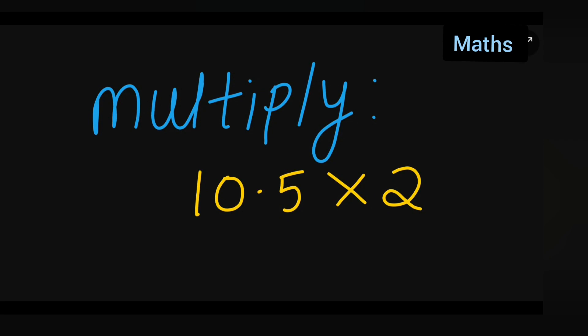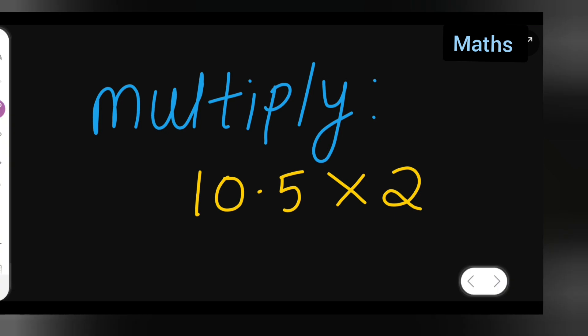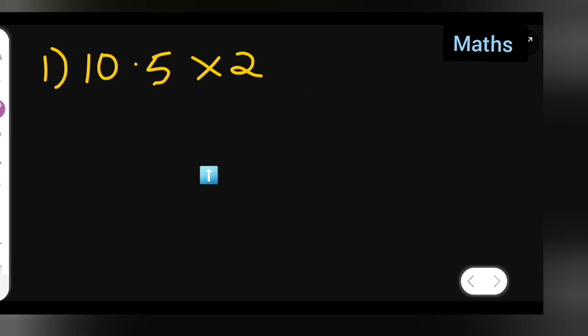Welcome to today's class of mathematics. Let's see how to multiply 10.5 multiplied by 2. First, I can take down the question. How are you going to place these values? Write down 10.5, after that the decimal point.